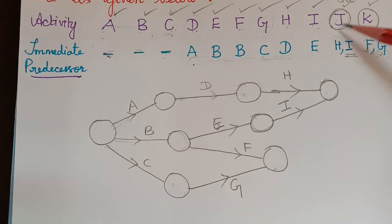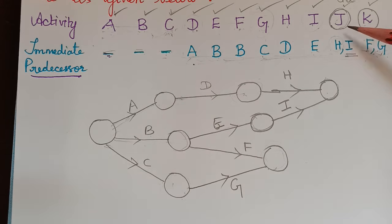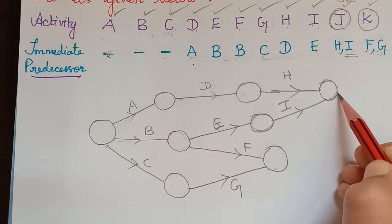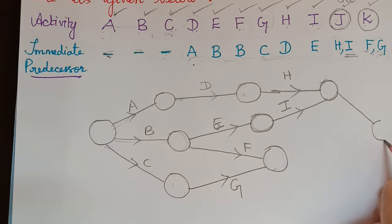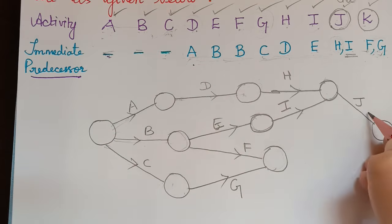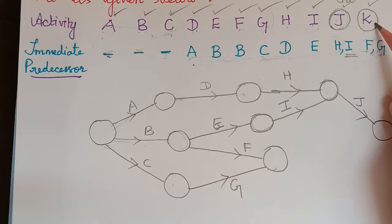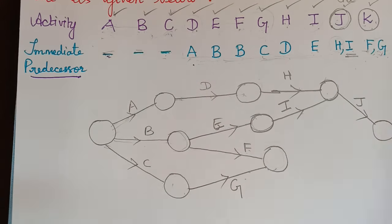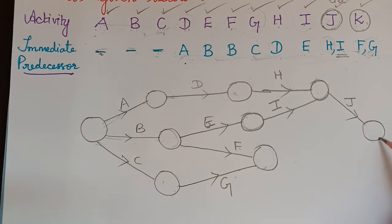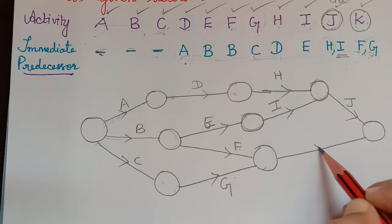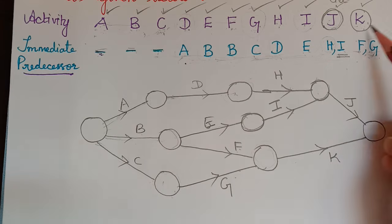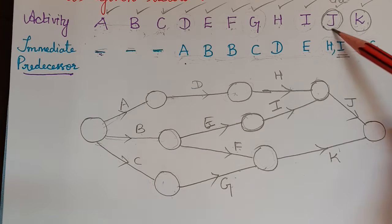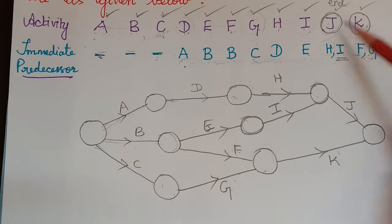Activity J is an ending activity preceded by both H and I, which share the same end node — so J is drawn from that node. Activity K is also an ending activity, preceded by F and G, which share the same end node — so K is drawn from that node. Both J and K are the final activities we identified earlier.